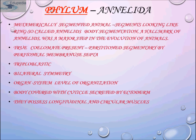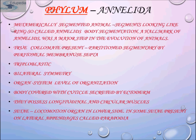They possess longitudinal and circular muscles. Setae are locomotion organs present on the lower side, and some setae are present on the lateral appendages called parapodia. The body wall is covered with epidermis overlaid with a thin and pliant cuticle secreted by the epidermal cells. Most annelids possess short external bristles called setae, composed of chitin, which are used to grip the soil, hold the animal in a tube, or increase the surface area of appendages for swimming.